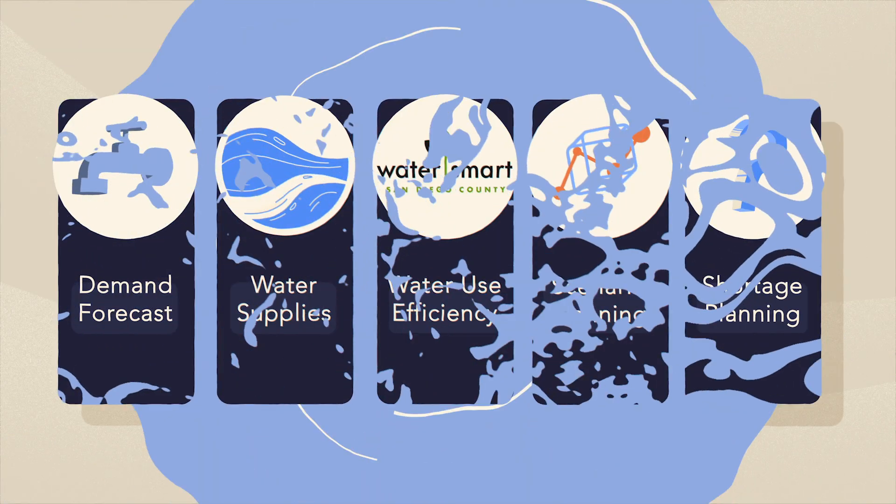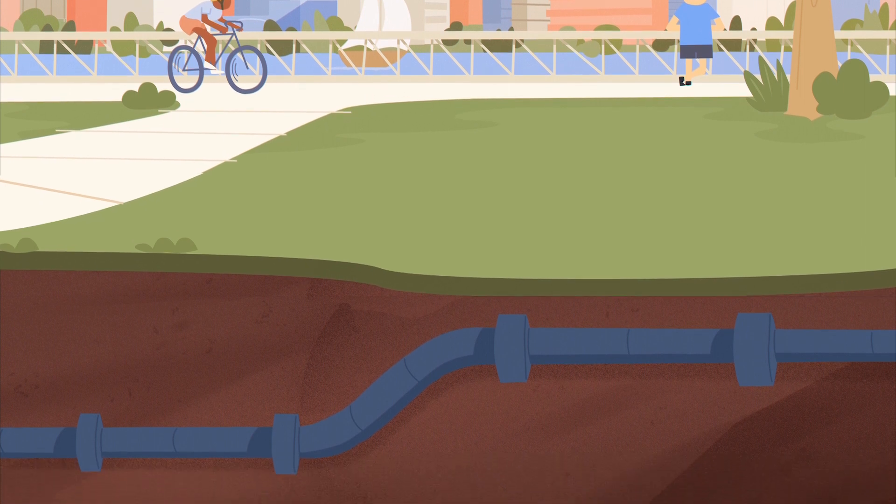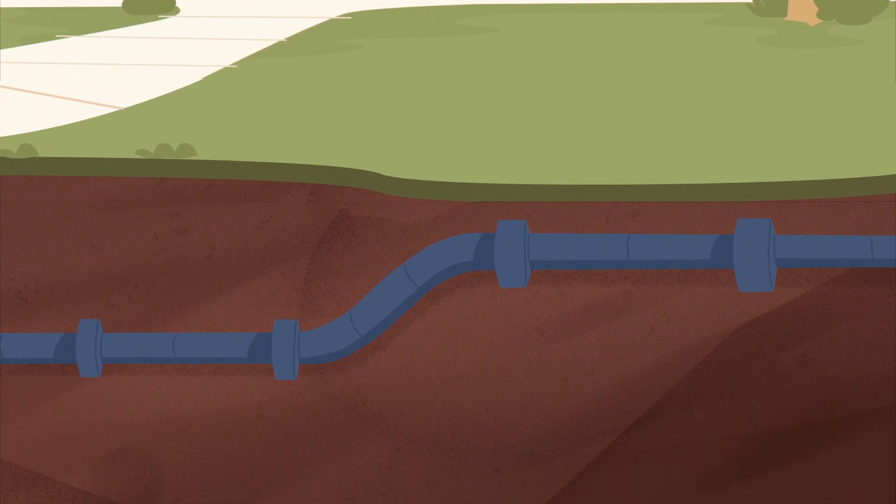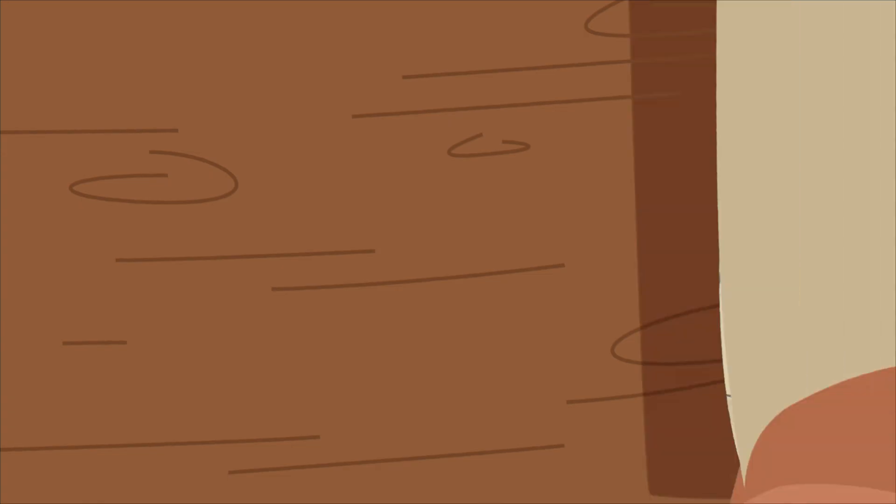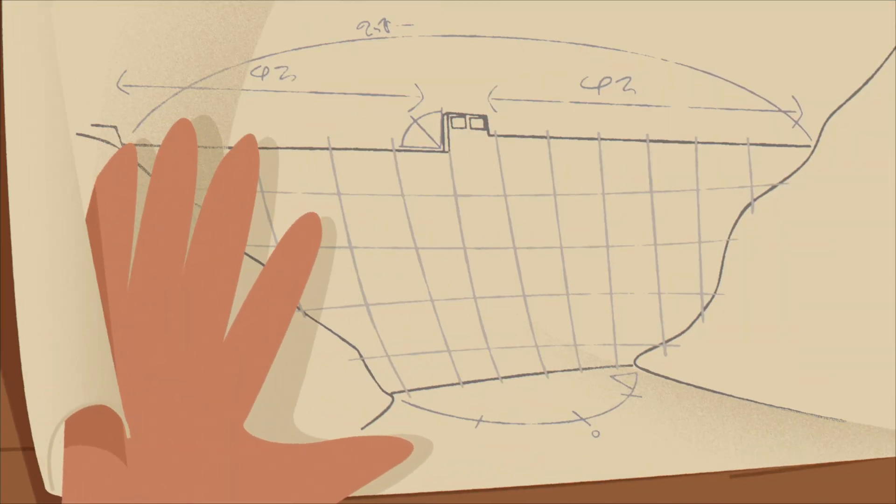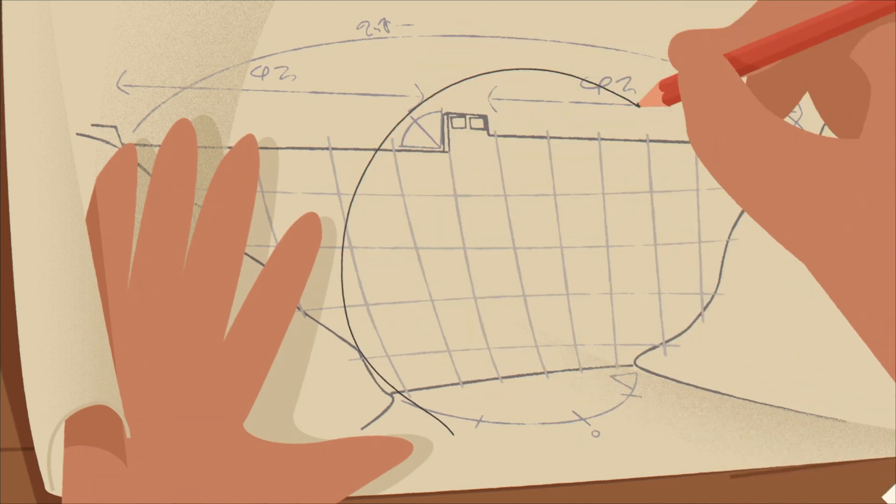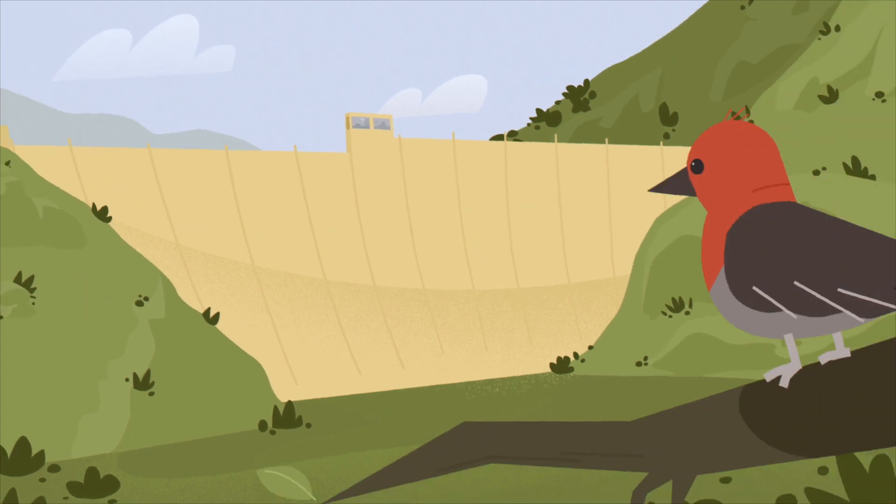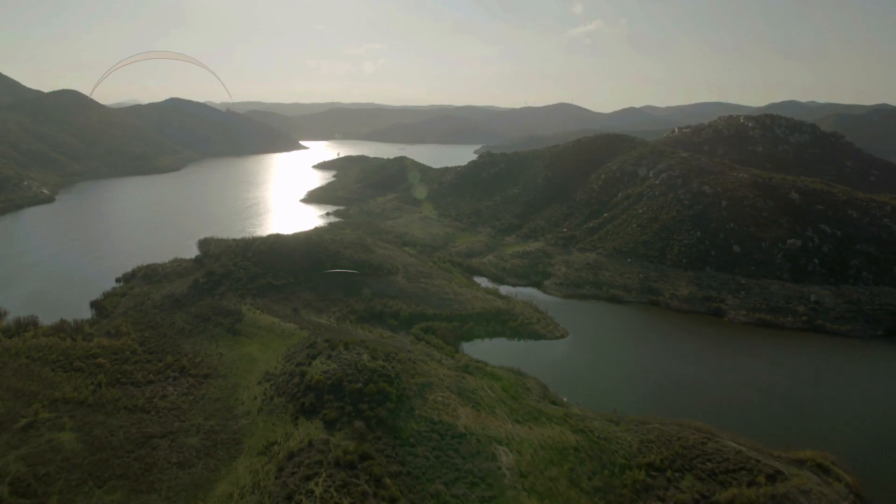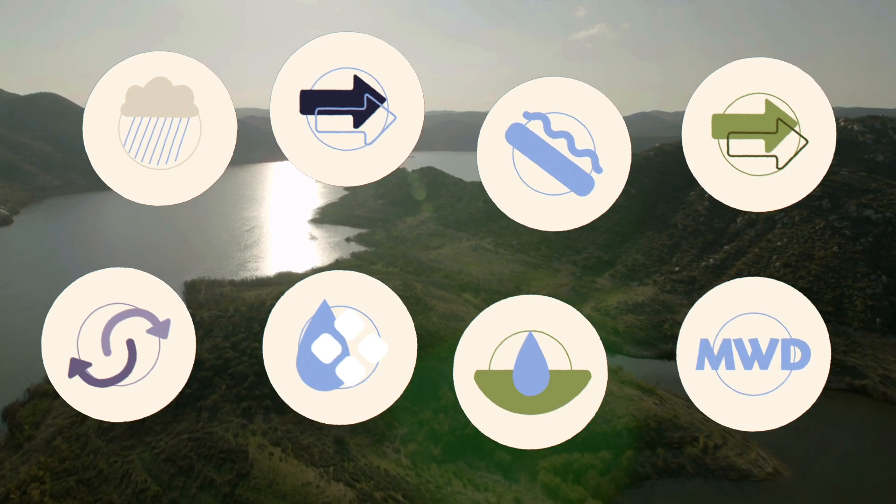Water shortage planning is the final element of the plan. As Californians, we know that we must plan for droughts and earthquakes, even if we don't know for certain when they might happen. Water planners must prepare for these and other potential threats and have strategies in place to ensure the safety and reliability of our water supply. Planners also address how water supplies should be allocated to regional member agencies in the event of a water shortage.